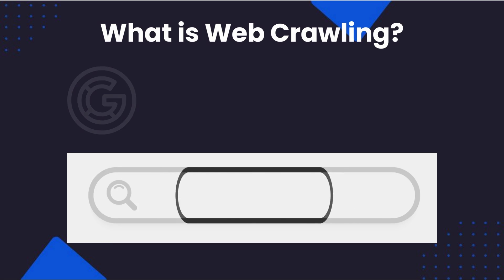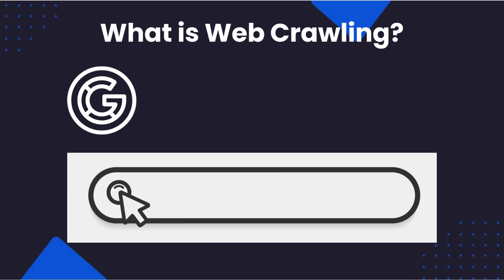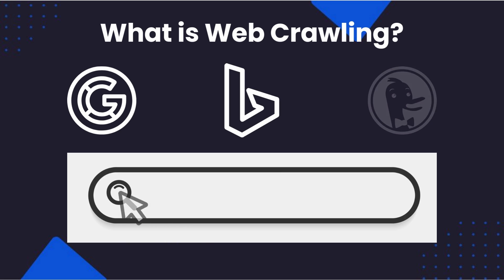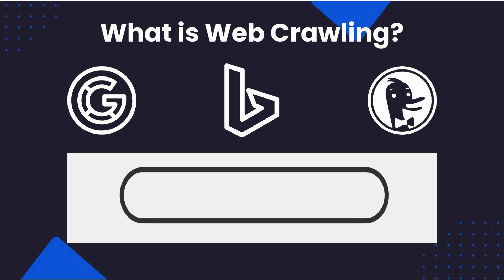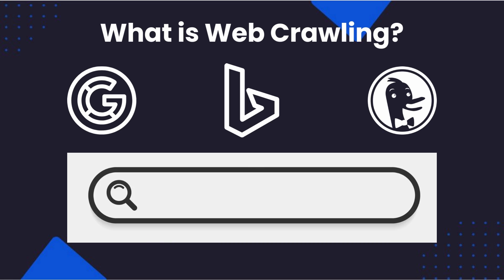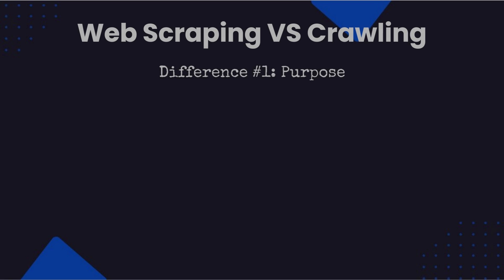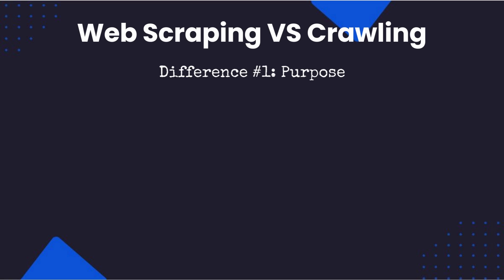The best example of web crawling is search engines. Search engines like Google, Bing, and DuckDuckGo build web crawlers whose purpose is to visit and map every website on the internet and determine what each web page is about and what keywords it should rank for.